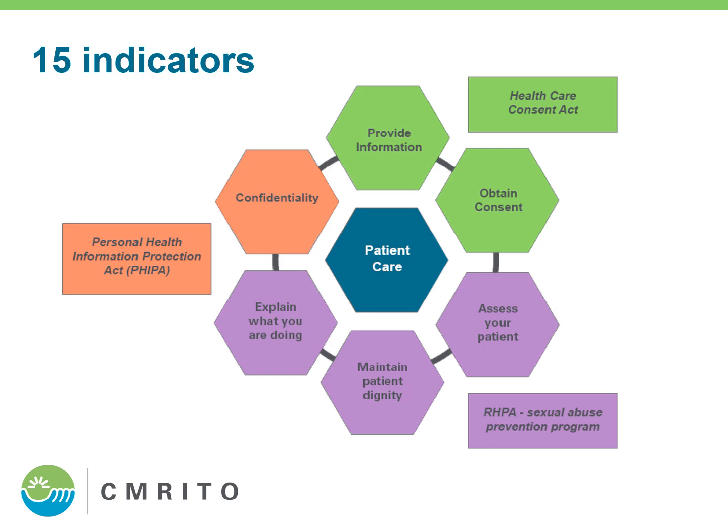The 15 indicators in standard five can be grouped into three main categories. The first revolves around providing information and answering questions to assist patients in providing informed consent, and if the questions they're asking are outside our scope, referring the patient to where they can get the answers they need. That group is reflected in green. The second group, reflected in purple, is about assessing our patients so we can modify and tailor procedures to their particular needs.